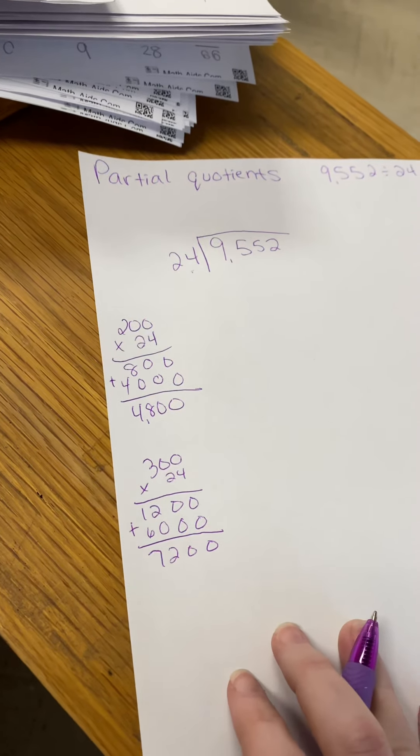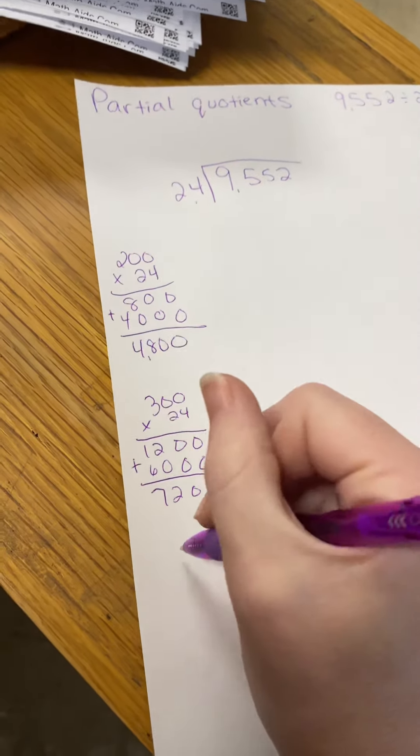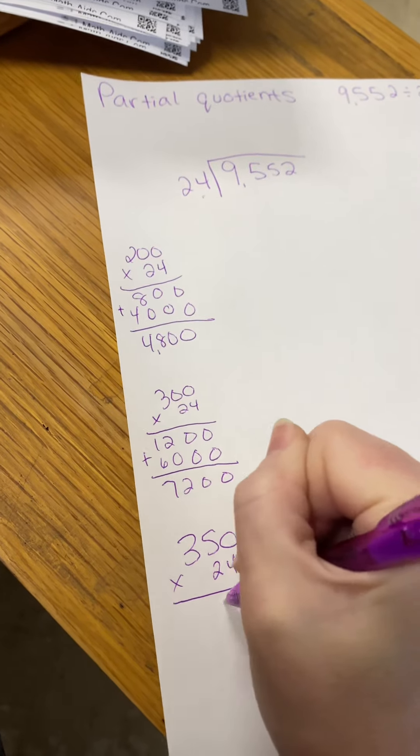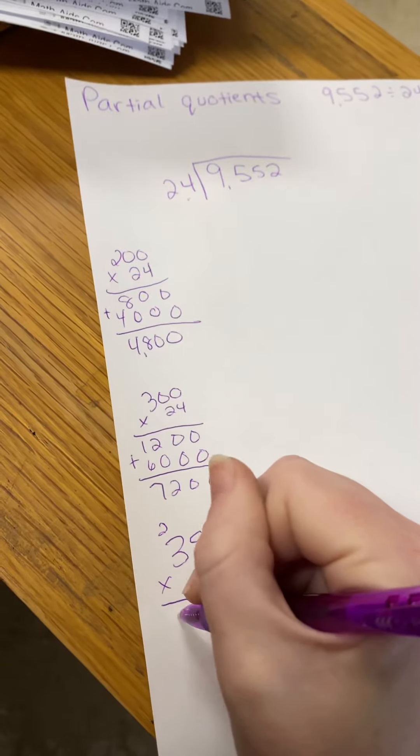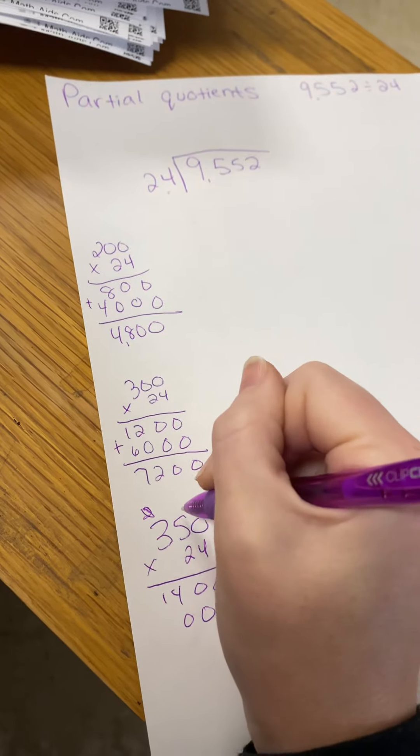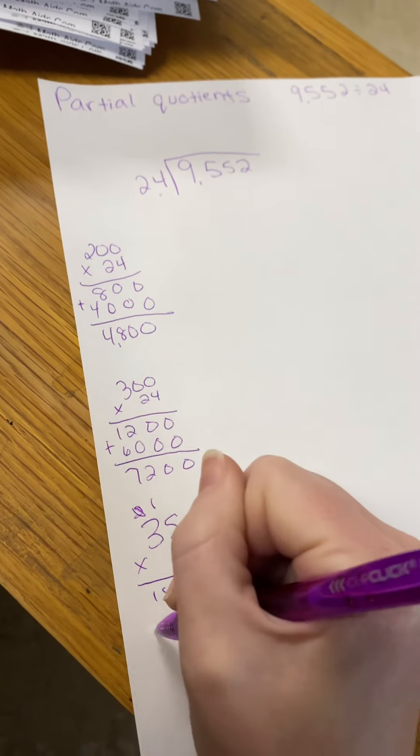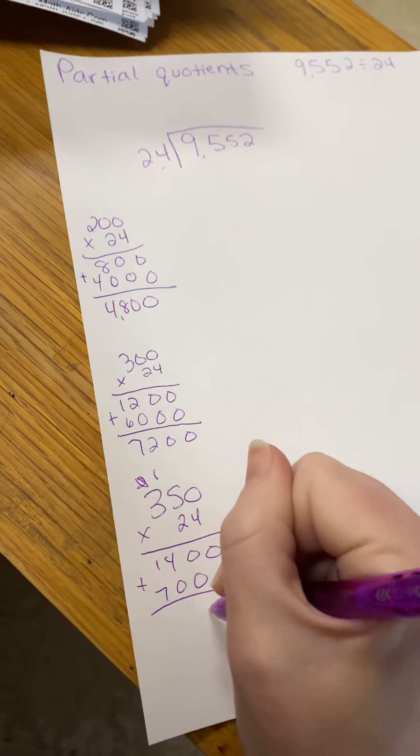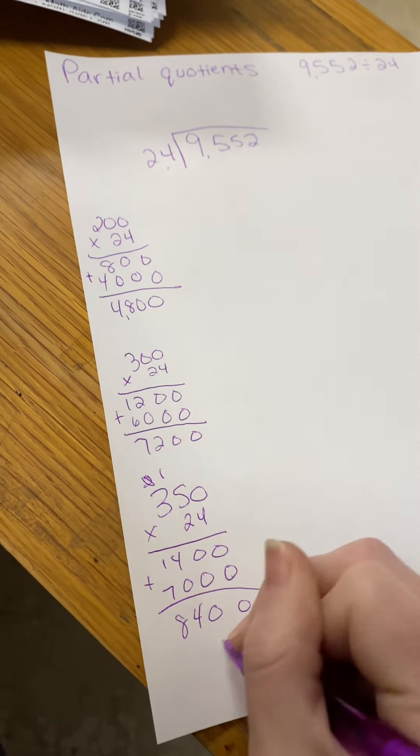Again, not high enough. So we can try again. Let's try 350 times 24. 0, 20, 14, placeholder, 0, 10, 7. Then you add your partial products again. You should get 8,400.